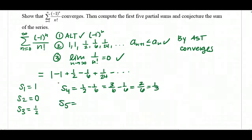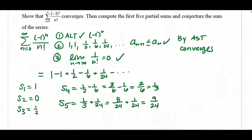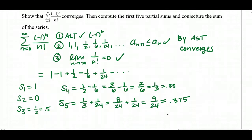Then S5: I take S4, which is 1 third, and add 1 over 24. So 1 third is 8 over 24 plus 1 over 24, giving 9 over 24. In decimals: 1 half is 0.5, 1 third is 0.333 repeating, and 9 over 24 is 0.375. If we wanted to conjecture what the actual infinite series sums to, it looks like it's settling around 0.3 something, so let's say it converges to about 0.4.